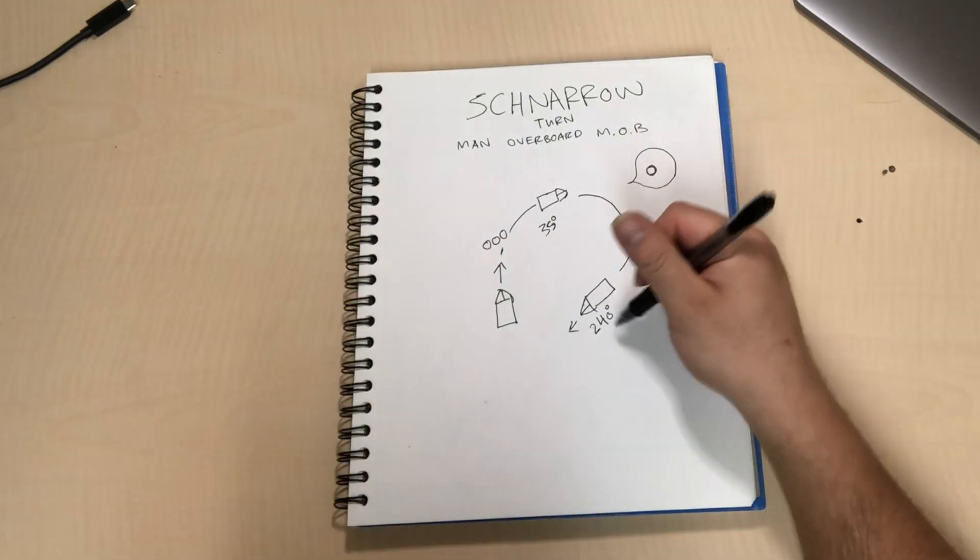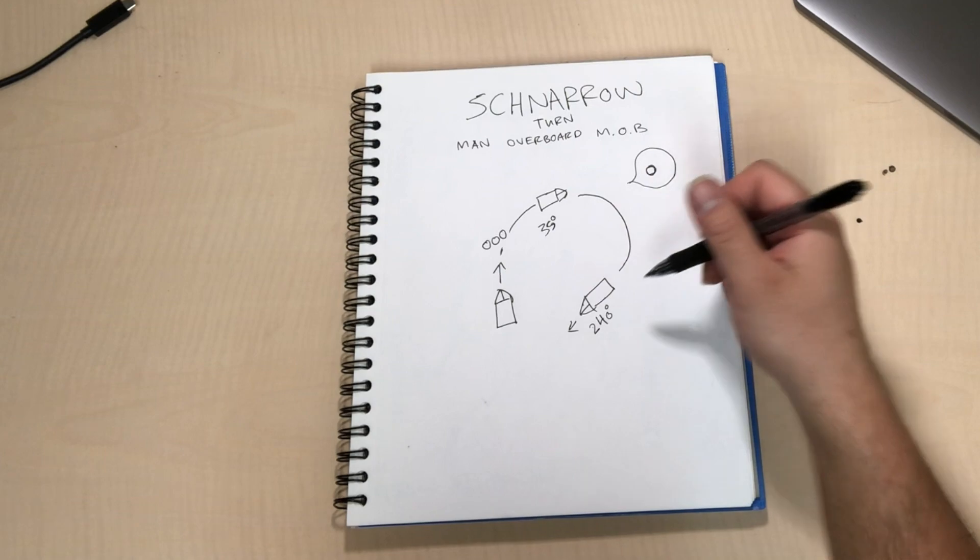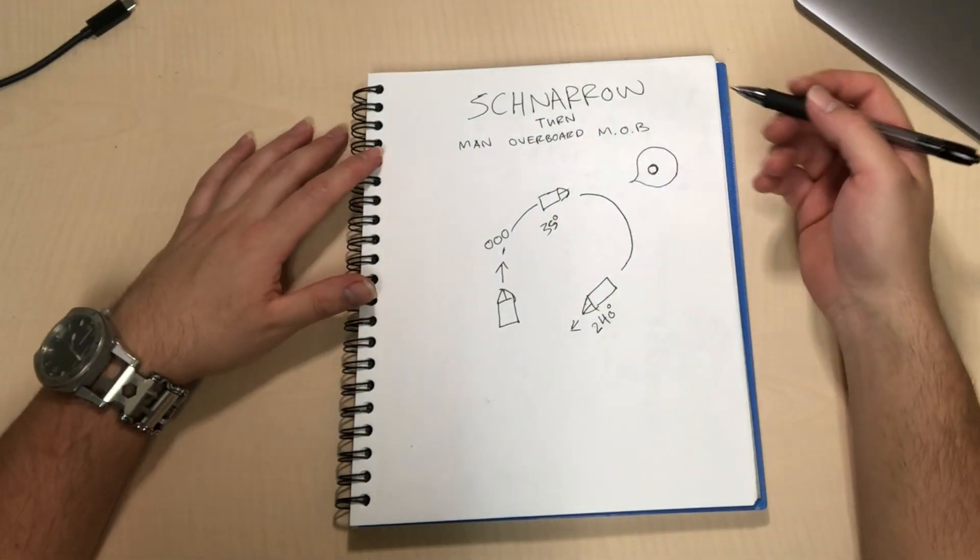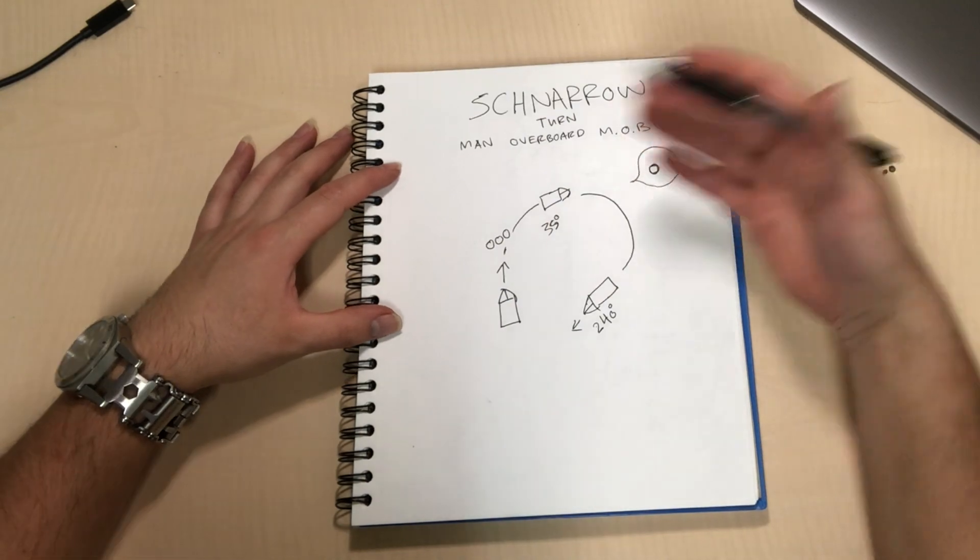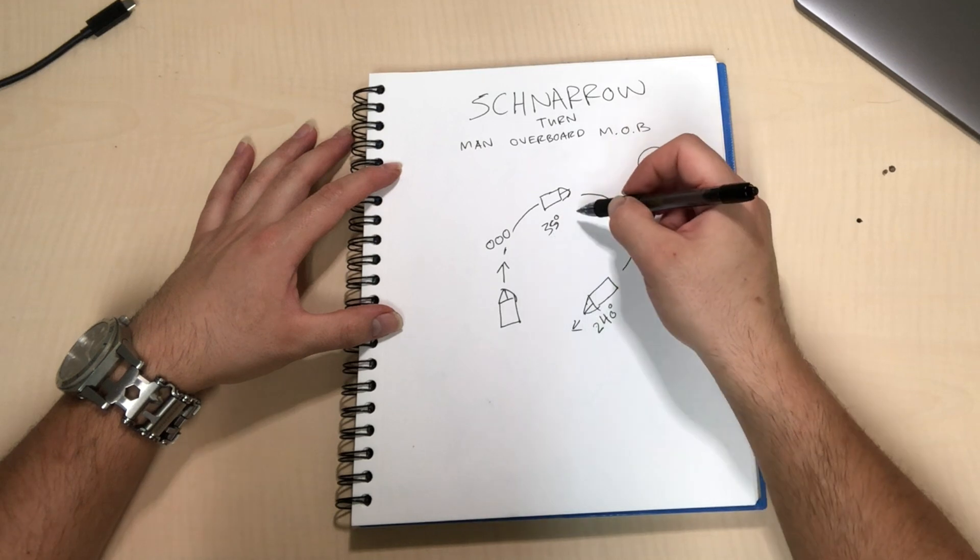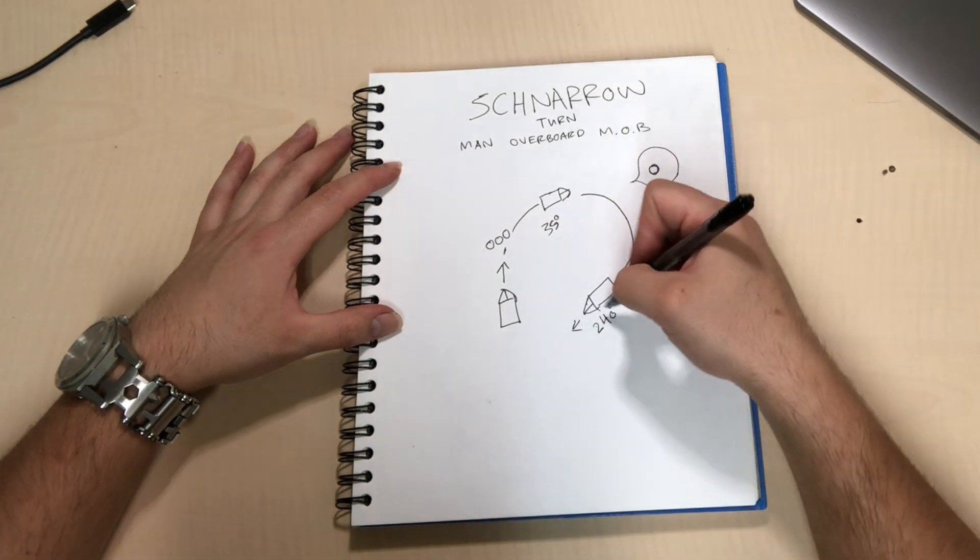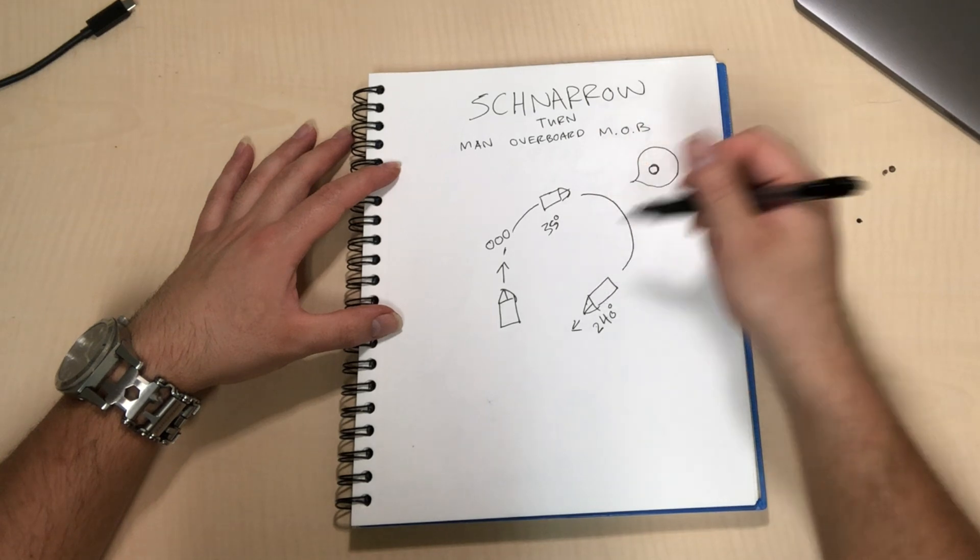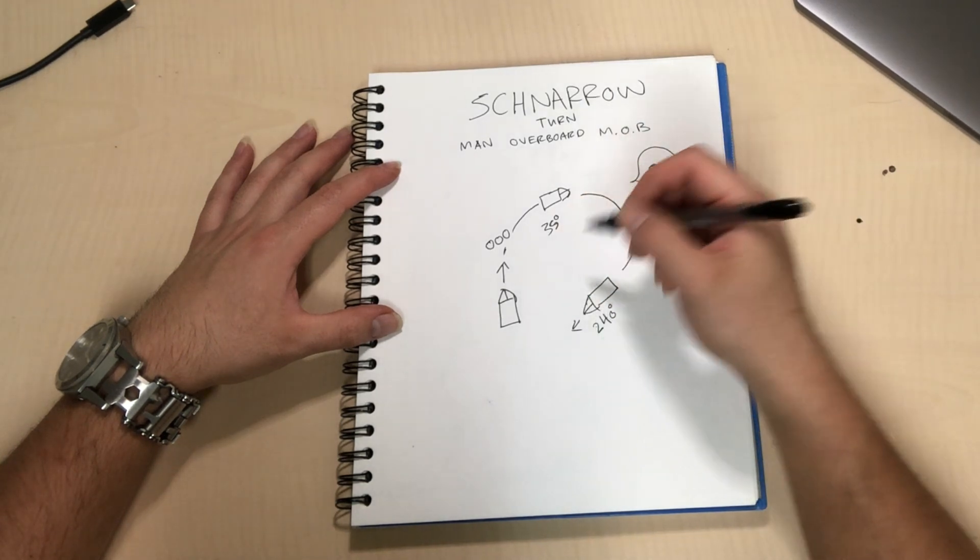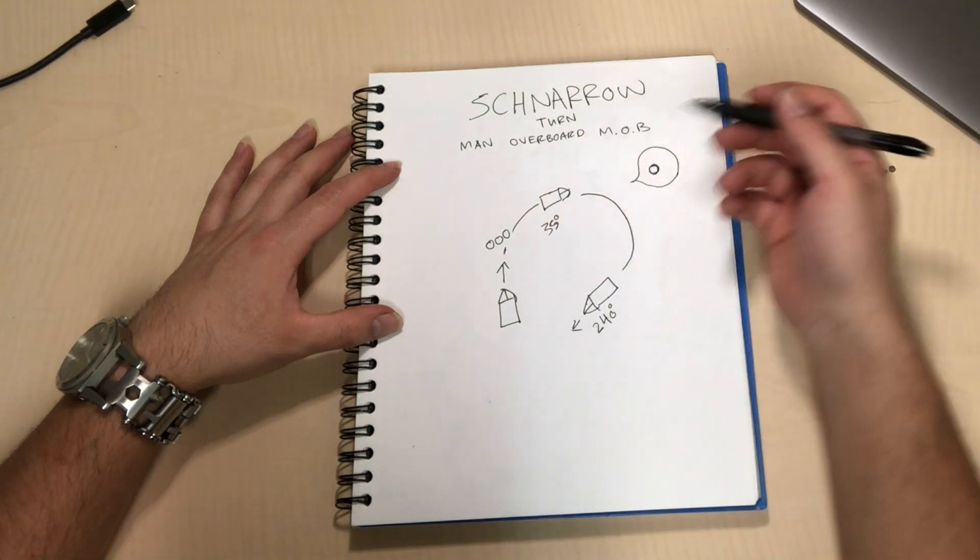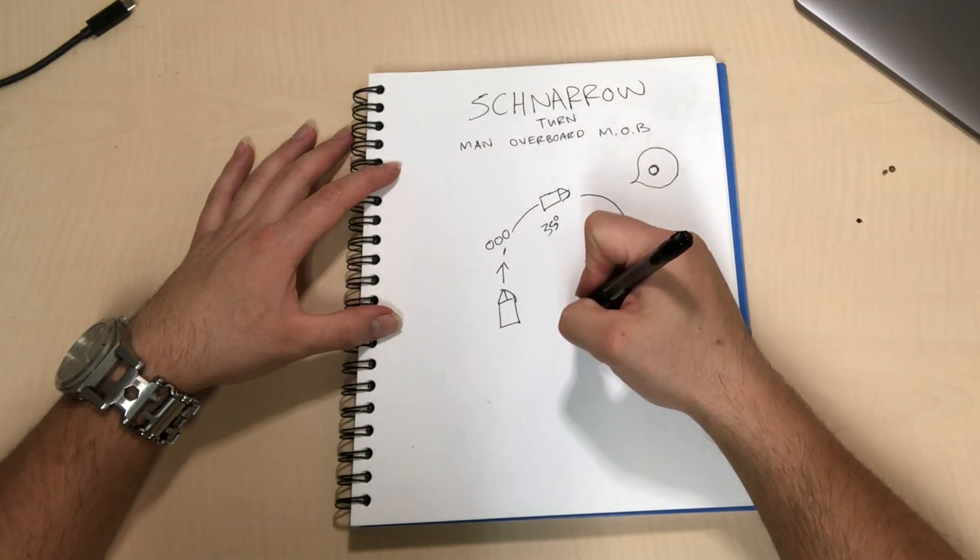Now once you are 240 degrees from the original course, in this case it'll be two four zero to make it simple, you're gonna shift your rudder and go hard over the opposite direction. So we went hard over 35 degree rudder to the right. Once you get to 240 degrees from your original course, you're gonna shift your rudder to left 35 degrees hard over.